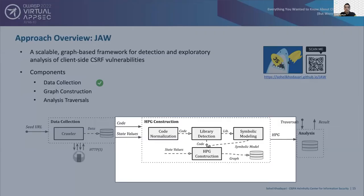For each web page found, the graph construction component of JAW instantiates a property graph given the JavaScript code and state values. JAW first creates a normalized JavaScript program by concatenating code segments inside script tags and inline scripts, preserving execution order. Then using the third-party library detector module, JAW symbolically models each library, reusing existing models as a proxy for analysis of application code. Given the library symbolic model, normalized JavaScript program, and state values, JAW creates a graph called a hybrid property graph, or HPG, which can be traversed to identify client-side vulnerabilities like client-side CSRF.